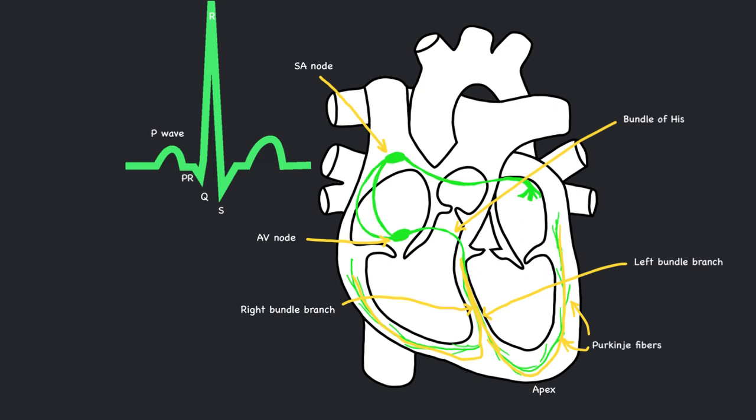During this time, atrial repolarization is occurring, but it cannot be seen on the EKG because of the large QRS complex. Contraction of the ventricles occurs just after the QRS complex during the ST segment. This pushes blood through the semilunar valves into either the pulmonary trunk or the aorta. The ventricles then repolarize in preparation for the next heartbeat. This is represented by the T wave. After the T wave begins, the ventricles relax.